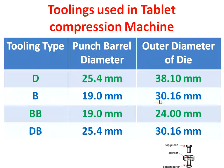For B type tooling, the punch barrel diameter is 19 mm and the die diameter is 30.16 mm. For BB tooling, the punch barrel diameter is 19 mm and the die diameter is 24 mm.